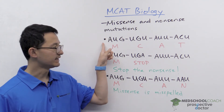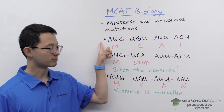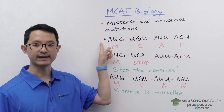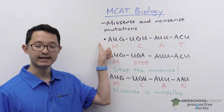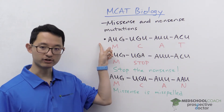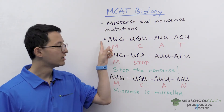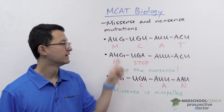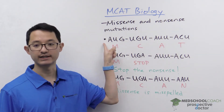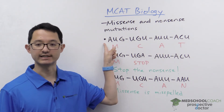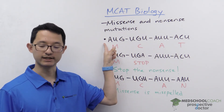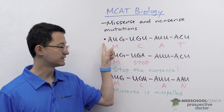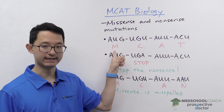In the first row we have a 12 nucleotide sequence, and since codons are three nucleotides each, we have four codons. The first codon, AUG, is the start codon, and it codes for the amino acid methionine.